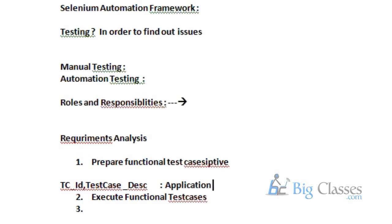Whenever a bug is posted, it is marked as open status. Once the developer fixes it, we give the fixed status. Whenever the bug is fixed or resolved, we do retesting on that specific bug. Retesting means: whenever a bug is posted and it is fixed, we execute the same previous steps on that specific requirement, passing multiple sets of data. If the bug still exists, we reopen it and send it back to the developer. If it is working as expected, we simply close the bug.